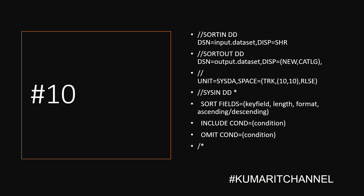We also have include and omit conditions — we have already seen these, but just to explain again: the include and omit condition cards are used to include or exclude records from the output based on a specified condition. This is useful for filtering data based on specific criteria such as account balance or transaction data. The include and omit cards are applied before the input data set is sorted.